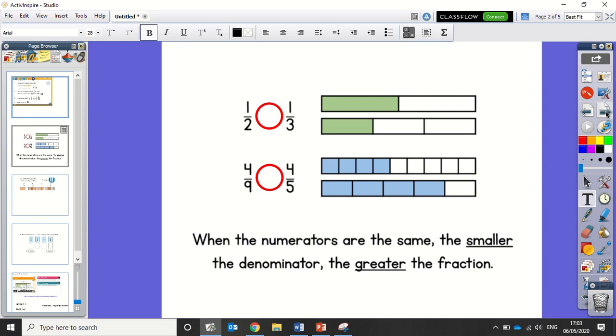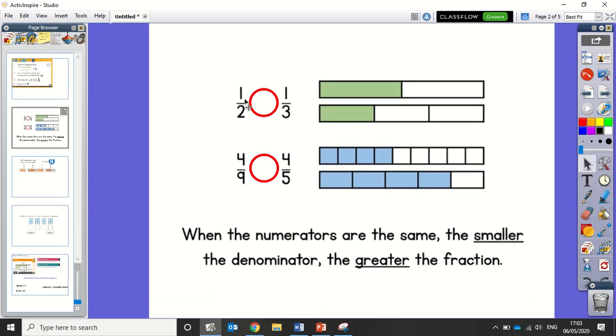So, key rule for this, when the numerators are the same, the smaller the denominator, the greater the fraction. Okay, so using that rule, do you think that a half is greater than or less than a third? Well, the 2 is smaller than the 3, so that would mean that half is bigger than a third. Let's see if it's right. It is.